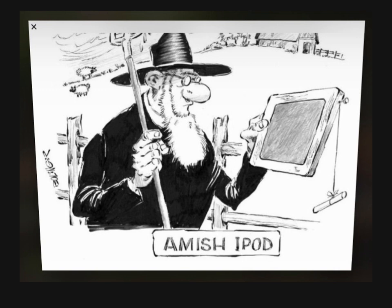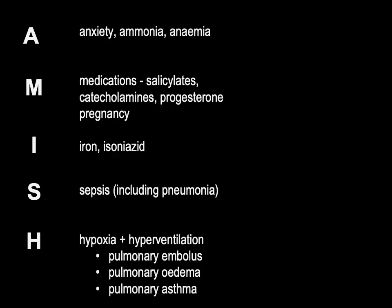AMISH is a nice memory aid for remembering the causes of respiratory alkalosis. While hyperventilation is one that we all remember, there are other causes: anxiety, high ammonia levels — for example in liver failure — and severe anemia. Medications can also result in respiratory alkalosis: salicylate toxicity, catecholamines or illicit stimulants, patients on adrenaline or noradrenaline, and high progesterone levels in pregnancy. Iron overdose and isoniazid can also cause it. Sepsis including pneumonia can cause it. The life-threatening causes of hypoxia with hyperventilation to remember are pulmonary embolus, pulmonary edema, and pulmonary asthma — and although anxiety is first, the life-threatening ones are at the bottom of the slide.